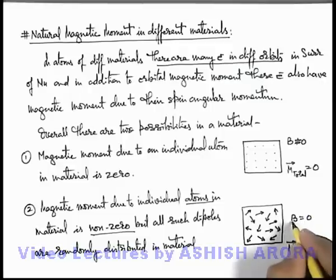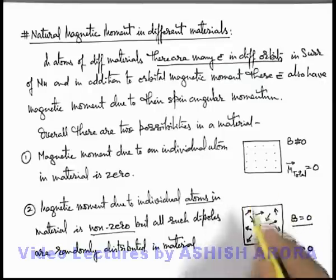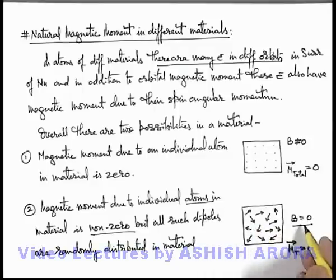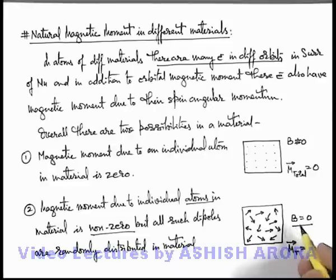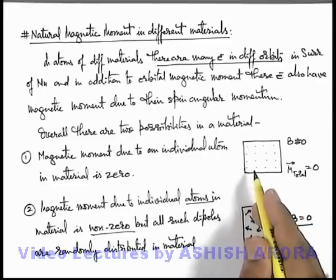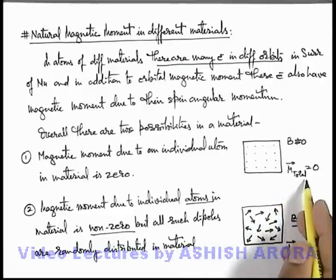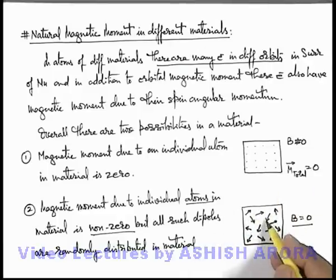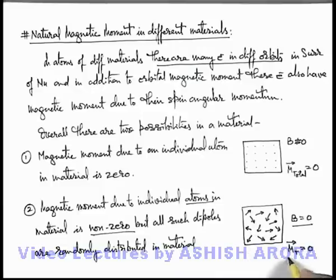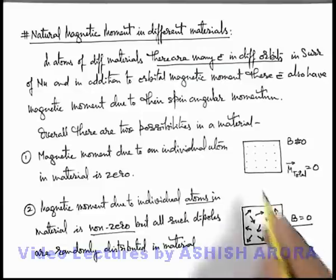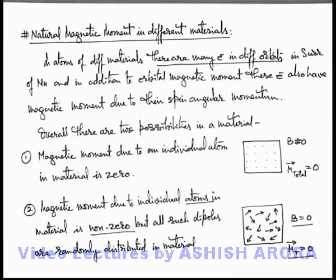So again we can say that in the surrounding, the magnetic induction due to this material will be zero. These are the two possible cases for a normal material which does not produce any magnetic induction in its surrounding. In one case, if the individual magnetic moment of an atom or molecule is zero, the total magnetic moment of the material is zero. In another case, the individual magnetic moment is non-zero but due to the random distribution of molecules and magnetic moments in the whole volume of material, the total magnetic moment is again zero. In both cases, no net magnetic induction is produced in the surrounding.